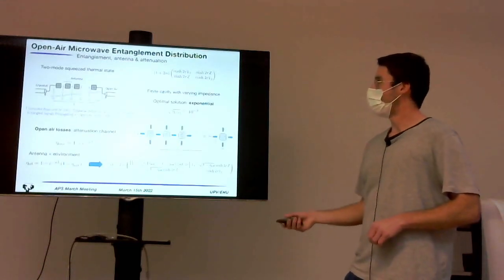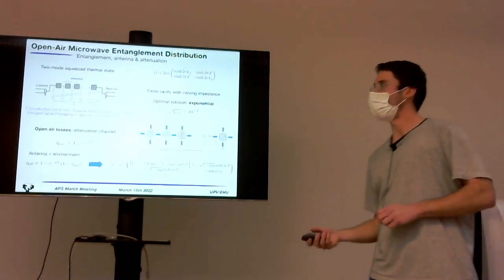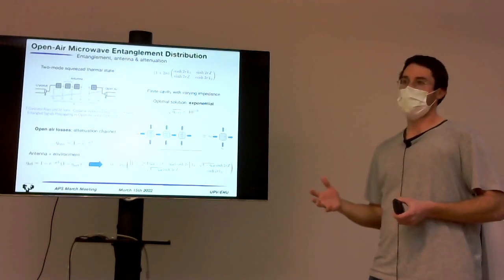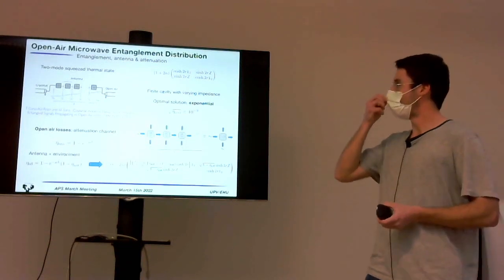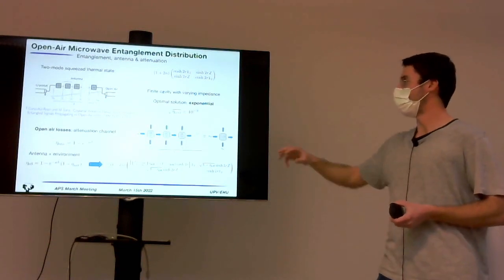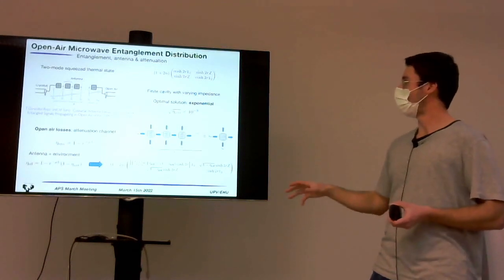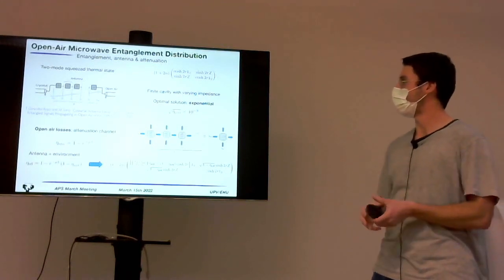Given that in microwaves at room temperature for five gigahertz frequencies, the number of thermal photons is around 1,200, these states are normally generated in cryogenic temperatures, so millikelvin temperatures, in order to reduce the effect of thermal noise in the states, which can degrade completely the quantum correlations.